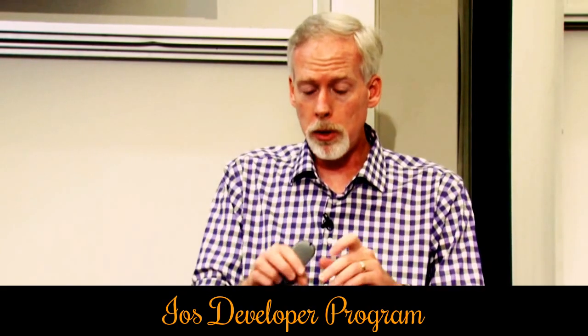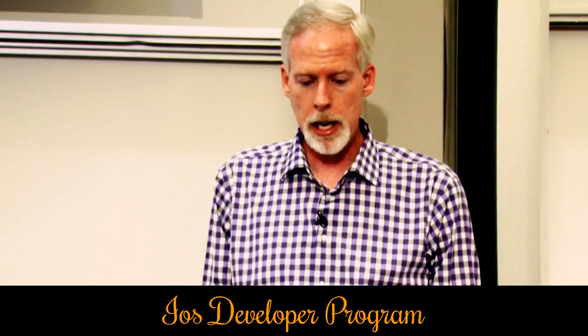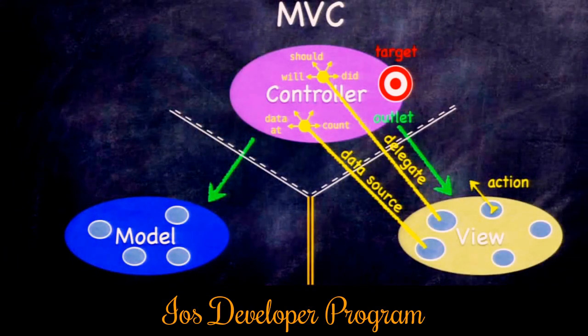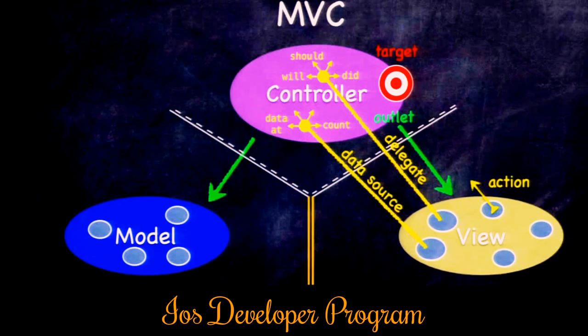Can the model talk to the controller? Again, that's forbidden because the model knows nothing about UI. But sometimes things change in the model and the controller needs to know about it — the database changes, or the model is some network database and something changes on the network.